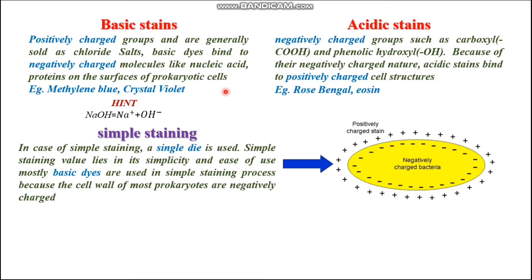An acidic stain is the complete opposite of a basic stain. Here we have negatively charged groups such as carboxyl groups and phenolic hydroxyl groups. Because of their negative charge nature, acidic stains bind to positively charged cell structures. Examples of acidic stains are rose bengal and eosin.